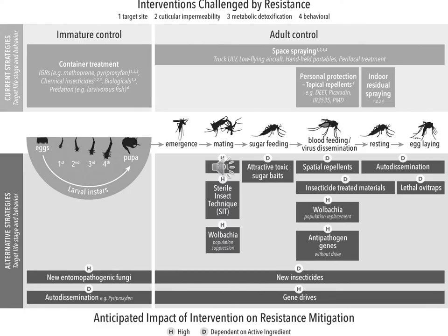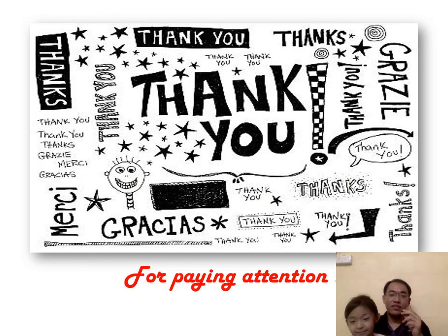This picture summarizes the methods for control of immature and adult mosquitoes. For immature control, it involves container treatments using either biological, physical, or chemical methods. The adult control methods work by interrupting the processes of mating, feeding, resting, and egg-laying stages. That's all for today's session — thank you for your attention.